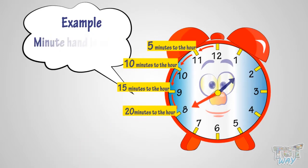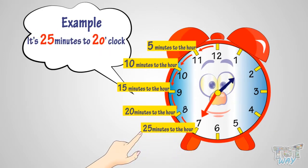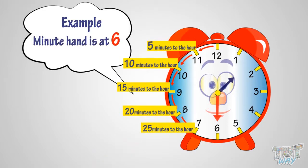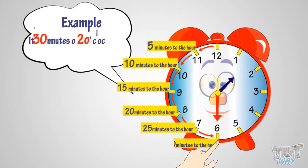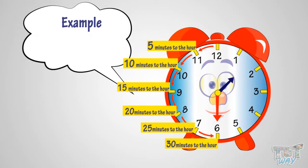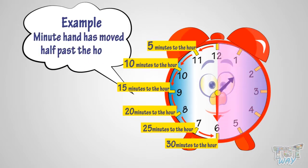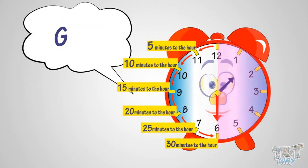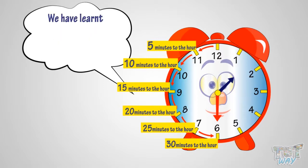Here the minute hand is at seven, so it's twenty-five minutes to two o'clock. Here the minute hand is at six, so it's thirty minutes to two o'clock — or half past one. The reason is the minute hand has moved half past the hour.